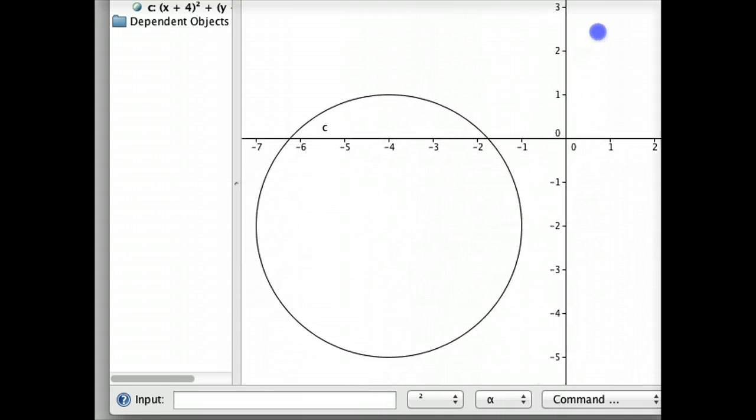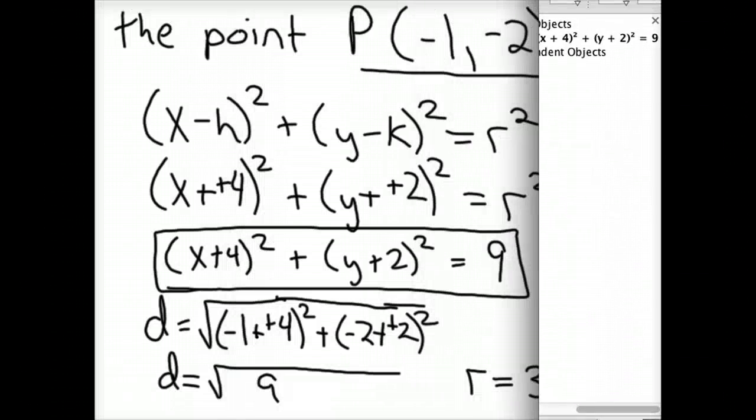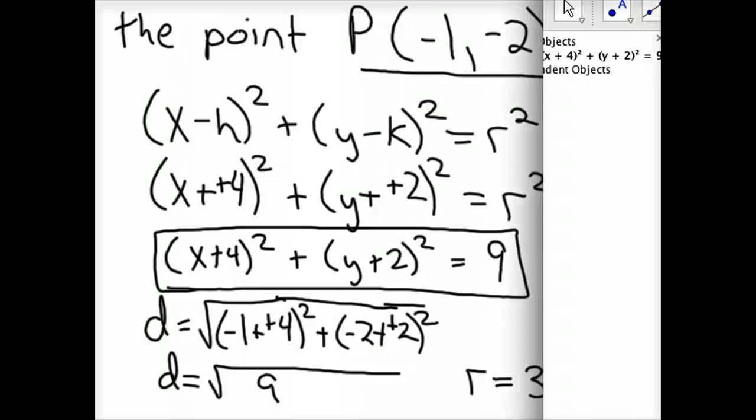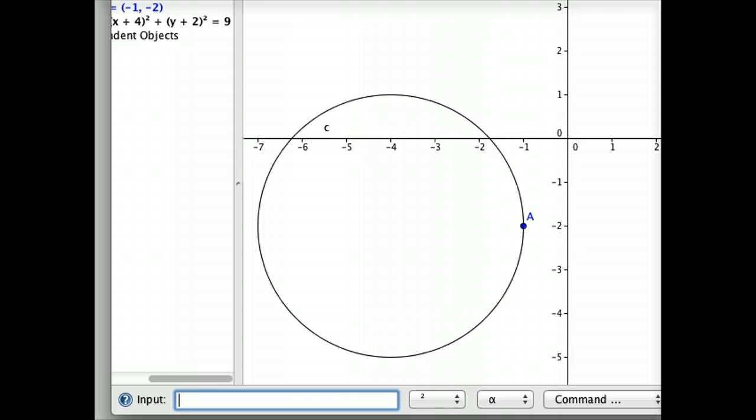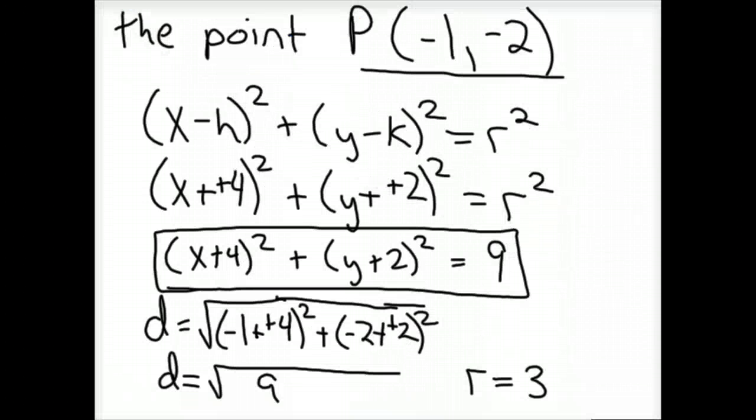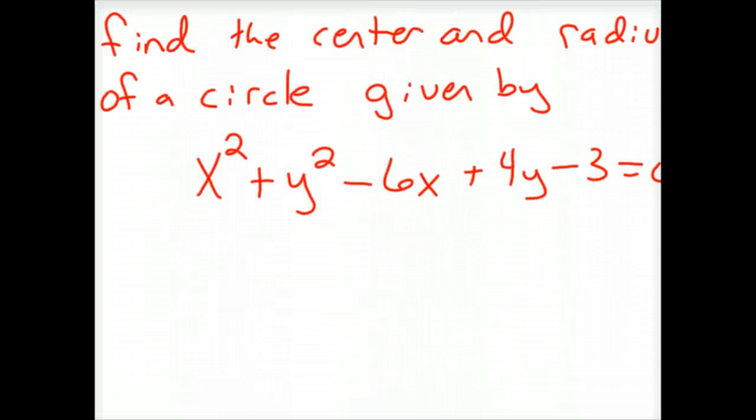So, we can get that right there. Now, so your center is negative 4, negative 2, and your radius should be 9. So, that point, we already know the center is right, but the point negative 1, negative 2 should be on that circle. So, we'll type in negative 1, negative 2. Hit enter, and sure enough, there it is. So, that's one way to check it. We know we got it right.